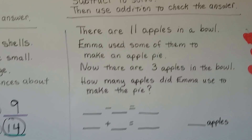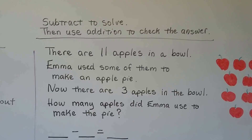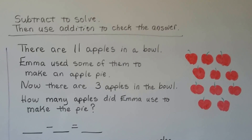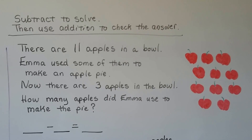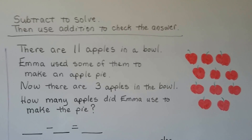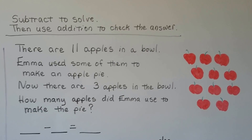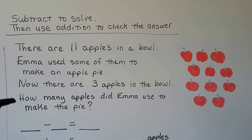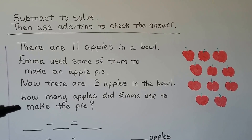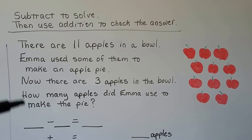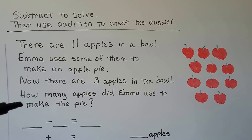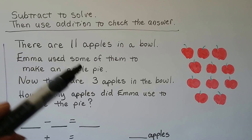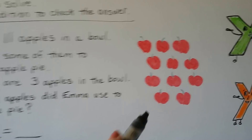Let's try another one. Subtract to solve, then use addition to check the answer. There are eleven apples in a bowl. Emma used some of them to make an apple pie — we don't know how many. Now there are three apples in the bowl. How many apples did Emma use to make the pie?